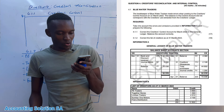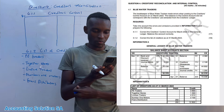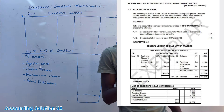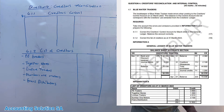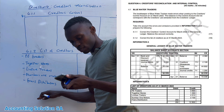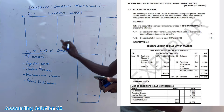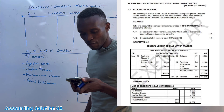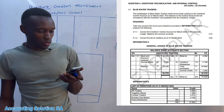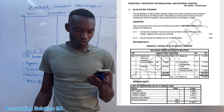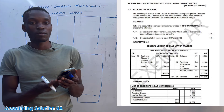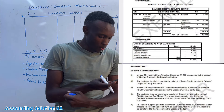The bookkeeper of Blue Water Trader made errors when posting the creditors control account. On 30 March 2022, the balance in the control account did not correspond with the creditors list — in other words, the total here must equal the total on the list. We are given a general ledger that is not complete and not correct. It is 17 marks, and the list will be 18 marks.